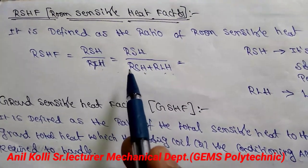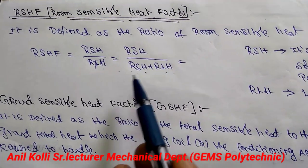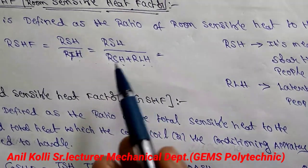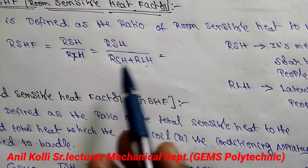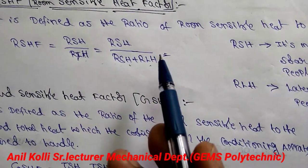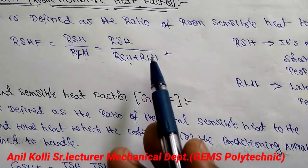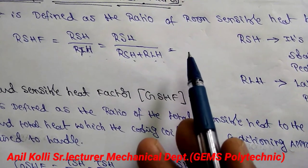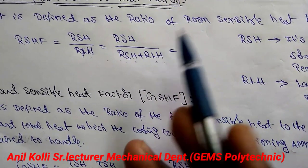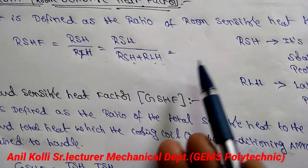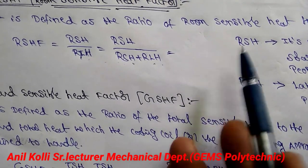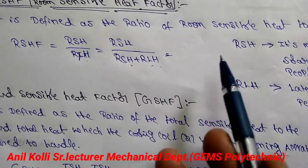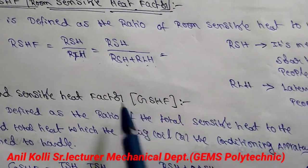Room sensible heat can come from sunlight, fans, lights, cooking inside the room, etc. Latent heat involves any phase change — for example, water converting to vapor content — that is latent heat. So we divide sensible heat by total heat to get the room sensible heat factor.